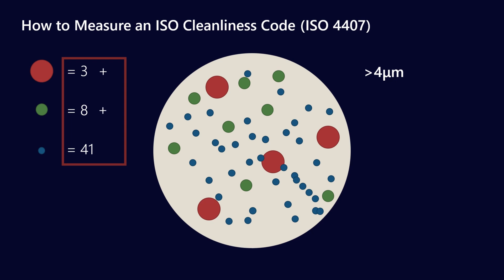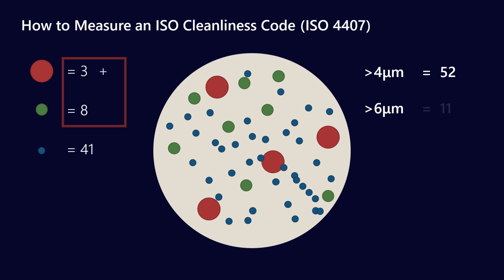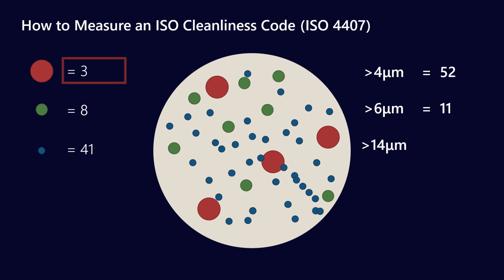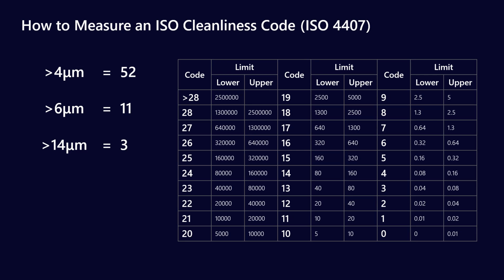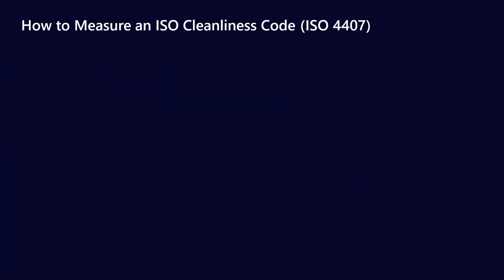Above 4 micron, you add all three of those numbers together to give a total of 52 particles. Above 6 micron, you add the two larger size groups to give 11. And for the 14 micron count, you just take the largest group, giving 3. That gives three numbers — 52, 11, and 3 — which you then match with the ISO cleanliness spec to get your ISO cleanliness code.